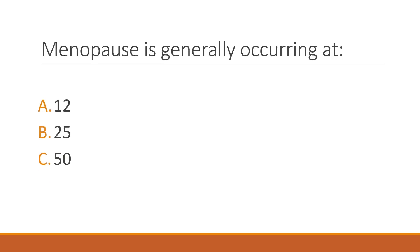Menopause generally occurs at which age? It normally occurs in the late 40s to early 50s, so the correct answer is option C.